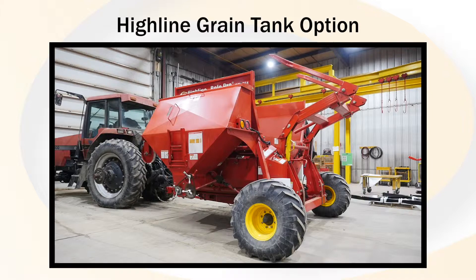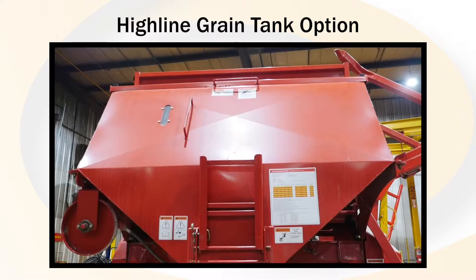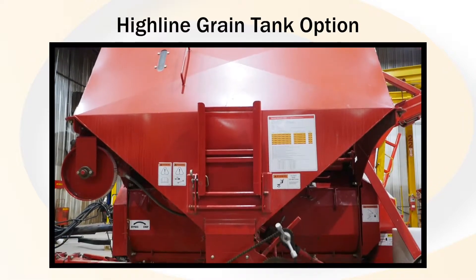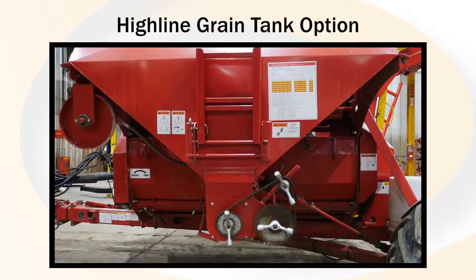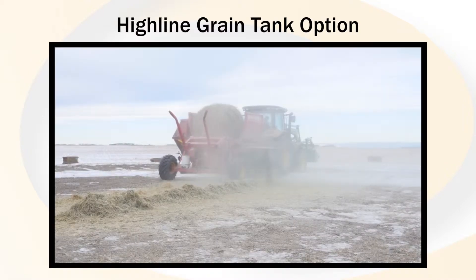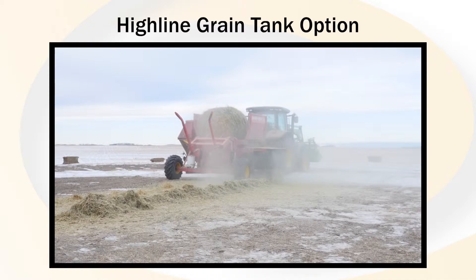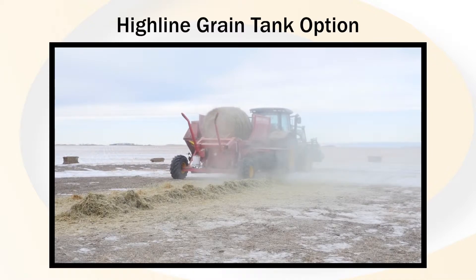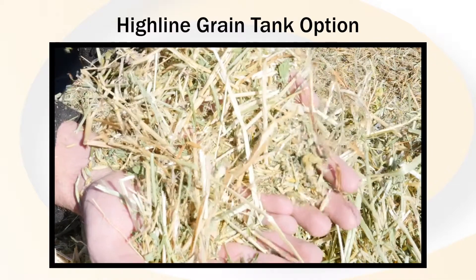To help complete a feed ration, Highline Manufacturing offers an optional grain tank attachment to adapt to your Highline CFR bale processor. This allows the user to use various types of grain or pellets at a selected rate and blend directly with forage material.